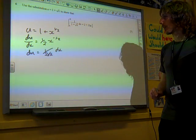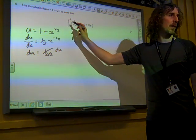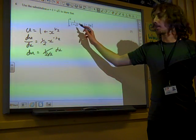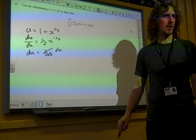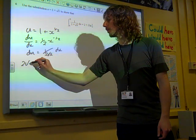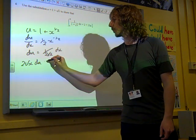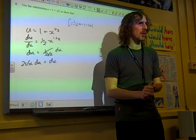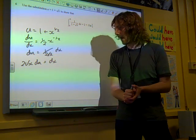Now, thinking ahead to what's going to go on here, that bottom right there is just going to be replaced by u, isn't it? We need a 2 root x in there as well. If we think about rearranging this, then that means that 2 root x du equals dx. I've still got this root x as a problem.